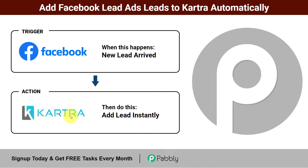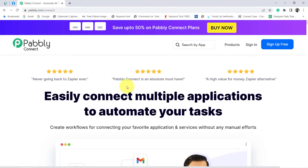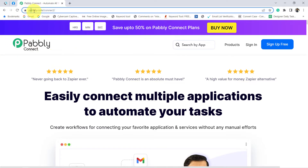In my automation, Facebook lead ad will be my trigger application and Kartra will be my action application. So let's create this automation. This is the website of that automation software, Pabbly Connect. You can also reach this website by typing pabbly.com/connect.